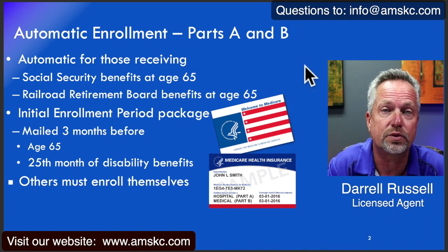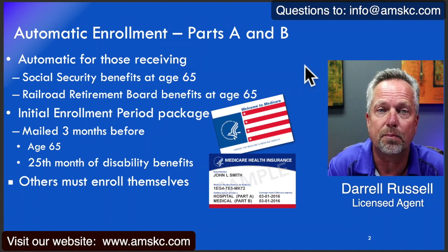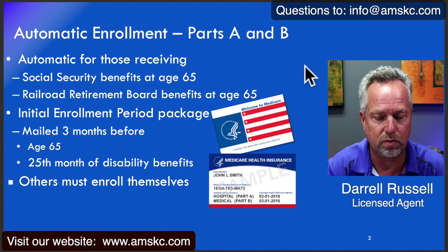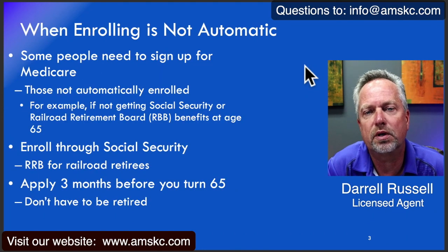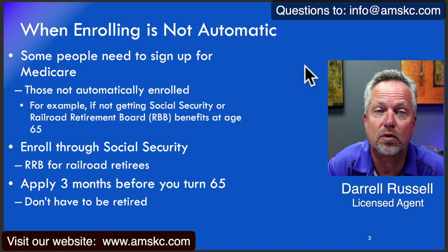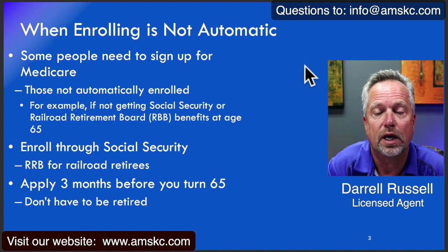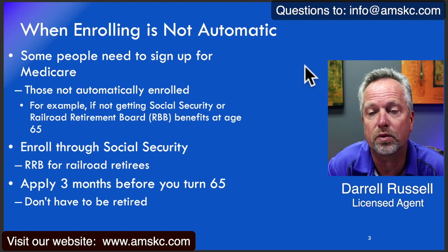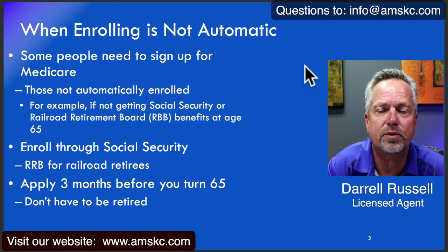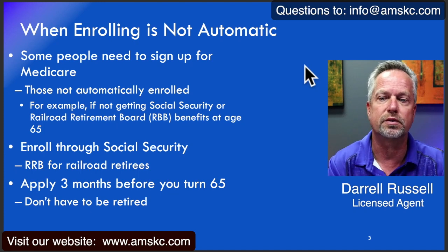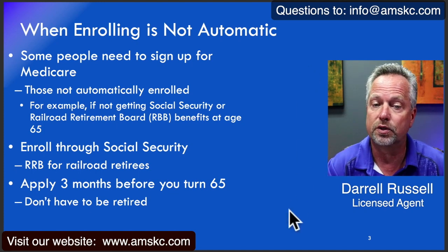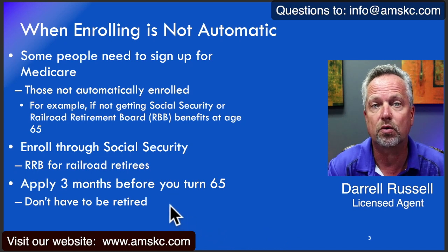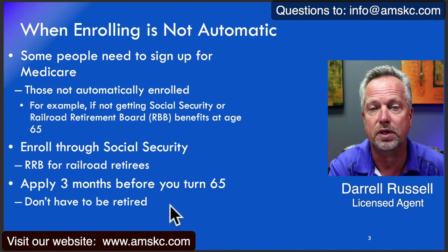As most people are aware, full Social Security retirement age has been pushed out beyond age 65, but they're not linked. So many people have to enroll themselves. When enrollment is not automatic — in other words, you're not drawing your Social Security benefits at age 65 — you need to sign up. You can apply through the Social Security office, or if you're a Railroad employee, you go through the Railroad Retirement Board. You can apply up to three months before you turn 65, and the important key here is you do not have to be retired in order to enroll and be eligible for Medicare Parts A and B.